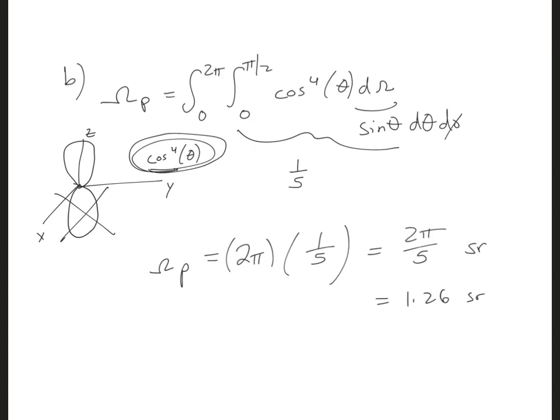If you compare this to an isotropic radiator, the isotropic radiator has a beam pattern solid angle of 12.57 steradians. So the beam pattern solid angle for this antenna is a lot narrower, meaning it has more directivity and it's focused more in a certain direction.